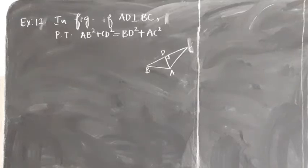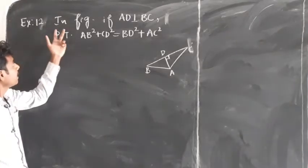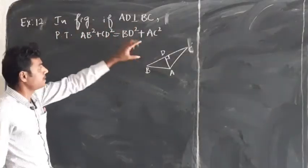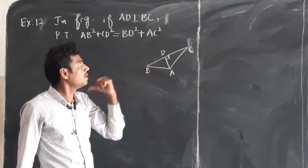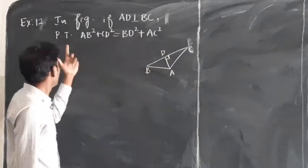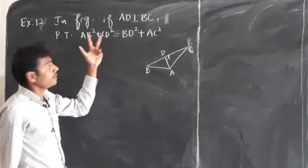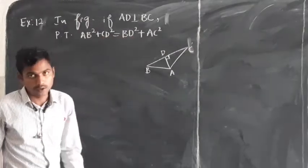We will continue with example number 12. In this figure, if AD is perpendicular to BC, prove that AB square plus CD square is equal to BD square plus AC square.